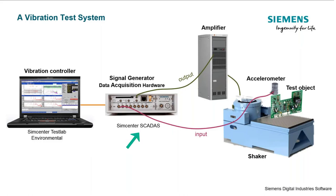Then we have an acquisition front end, used for both acquisition and output. With this we acquire data from the control channels and measurement channels, and also output the control signal to the amplifier and shaker. Oftentimes we have an amplifier unless our shaker has an integrated amplifier. The amplifier gains the signal from the front end and inputs it into the shaker. Depending on the size of the shaker or test item, a high level of voltage or current might be required, and that's where the amplifier comes in.